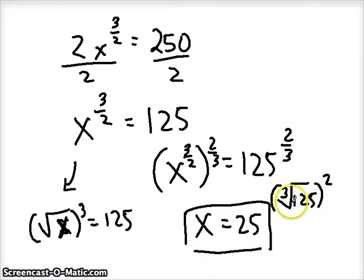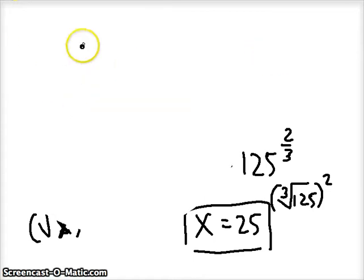Again, we're taking odd roots of things, so we're only getting one real root. If we plug it back in and check it, we've got 25 to the 3 halves power. So that's the square root of 25, which is 5 cubed, which is 125. And 125 times 2 is 250. So we checked it. Let's do another example.